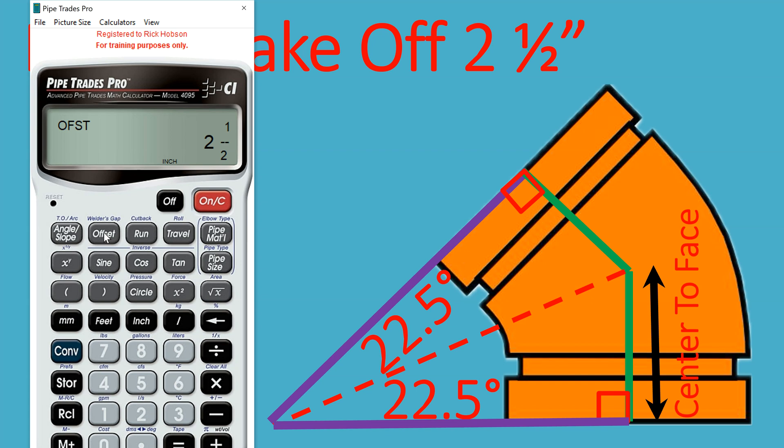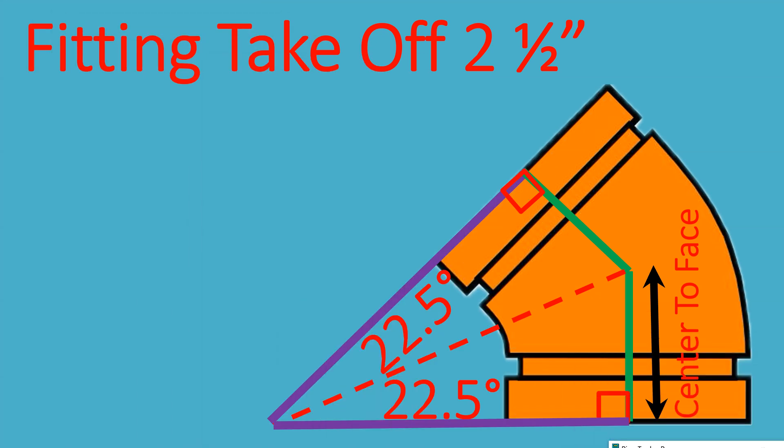So let's repeat this, convert clear. 6 inches is the run. 22.5 is the reference angle. Press the offset. 2.5 inches is the center of the face to takeoff, or the offset.